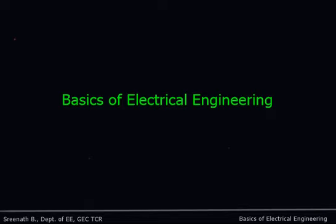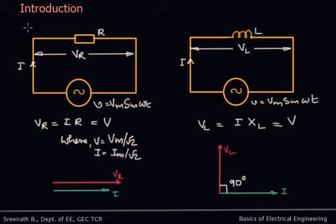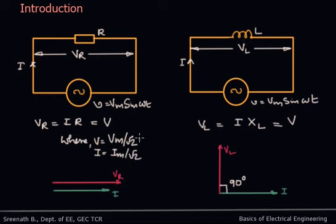Hello dear students, today we will be discussing the effects of AC through an RL series circuit. Before going to the topic, we'll have a quick recap of what we learned in the last sessions. We have already seen how a resistor behaves when supplied with an AC source. In the case of a resistor, voltage Vm sin(ωt) is applied, and the RMS voltage Vr developed across the resistor is given by I×R. Voltage and current are in phase in a purely resistive circuit.